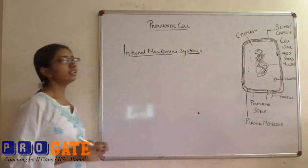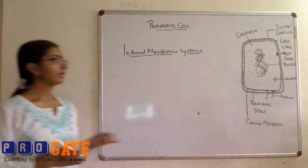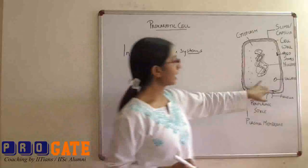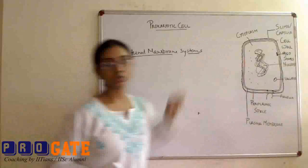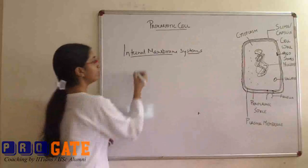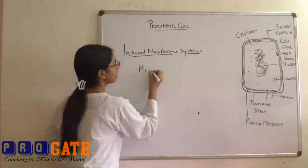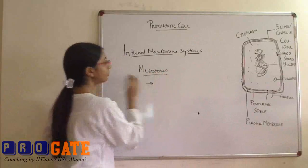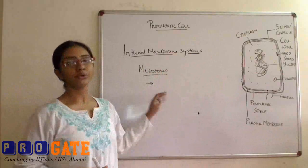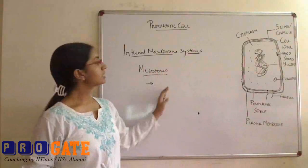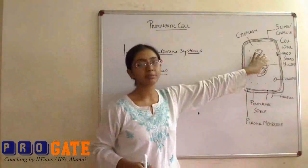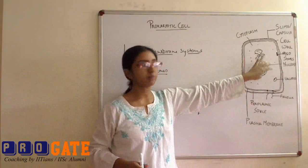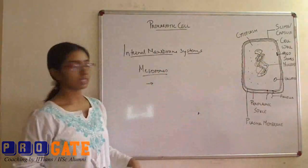There are various kinds of internal membranous systems that are present associated with the plasma membrane. One of them are mesosomes. Mesosomes actually perform the function that your mitochondria performs in the cell. So it is generally associated with the plasma membrane and performs the function associated with the plasma membrane.